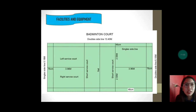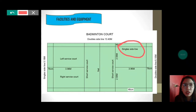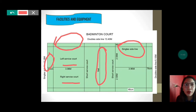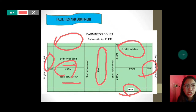Under facilities and equipment is the badminton court. There is a single line — kapag isa lang yung naglalaro or single, ito lang yung considered na line. For doubles, yung nasa labas po. There is the net sa gitna, the left service court and the right service court. The court measures 3.96 meters, with 76 centimeters at the end and 46 centimeters for another section.